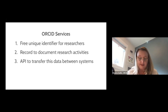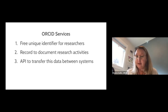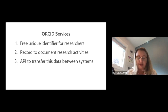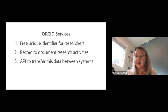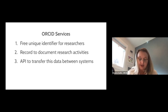ORCID provides three specific services. First is the unique ID — these are issued to people who are researching, either graduate students or researchers, and we're finding more people in research administration are also getting ORCID IDs. Second, we provide a record with each unique ID so people can document their research activities. Third, ORCID provides an infrastructure to share this data with other systems in the scholarly communications ecosystem.